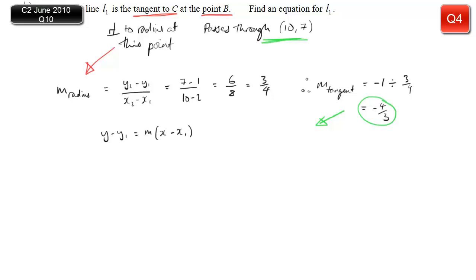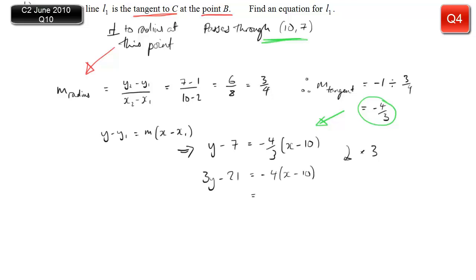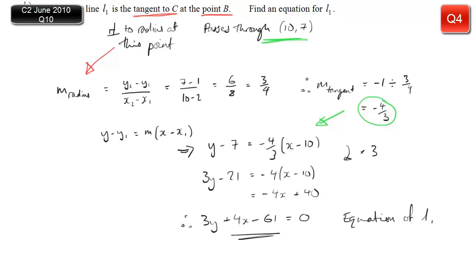Next, we use the fact that the tangent passes through (10, 7) and has gradient minus four thirds. Substitute into the standard formula for the equation of a straight line — those are the x and y values plus the gradient. Multiply by three, expand the brackets, then rearrange to put it in the standard form. That is the equation of line L1.